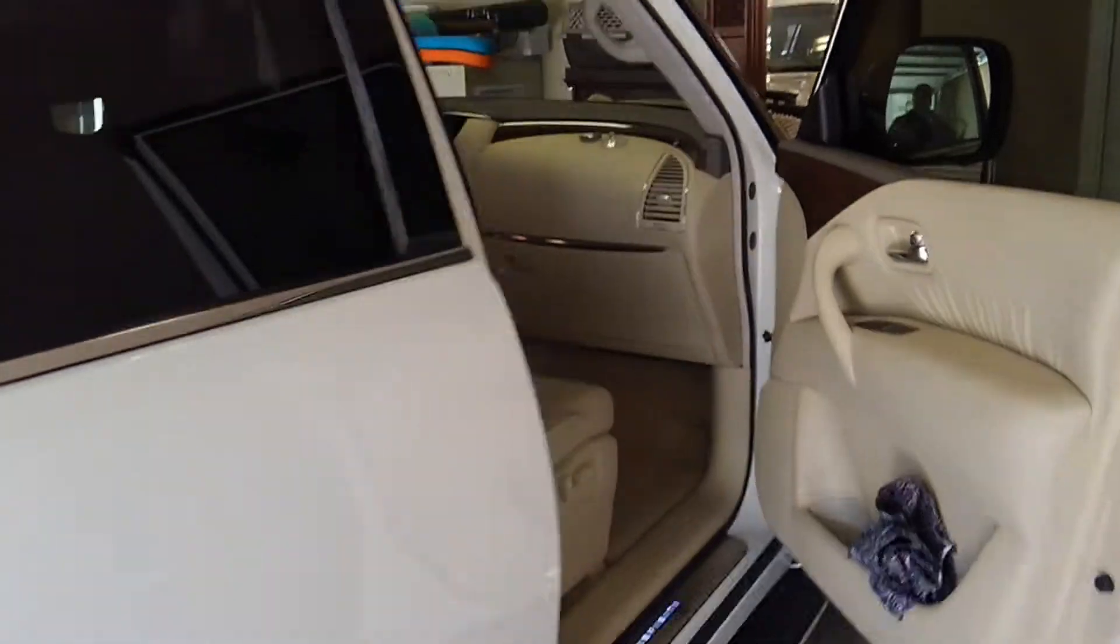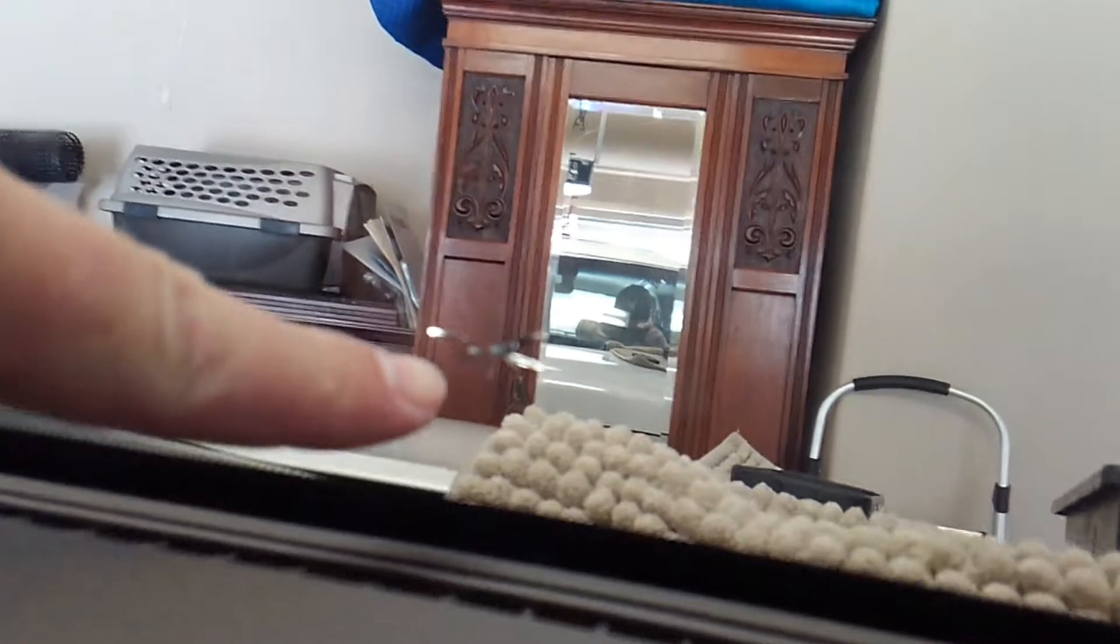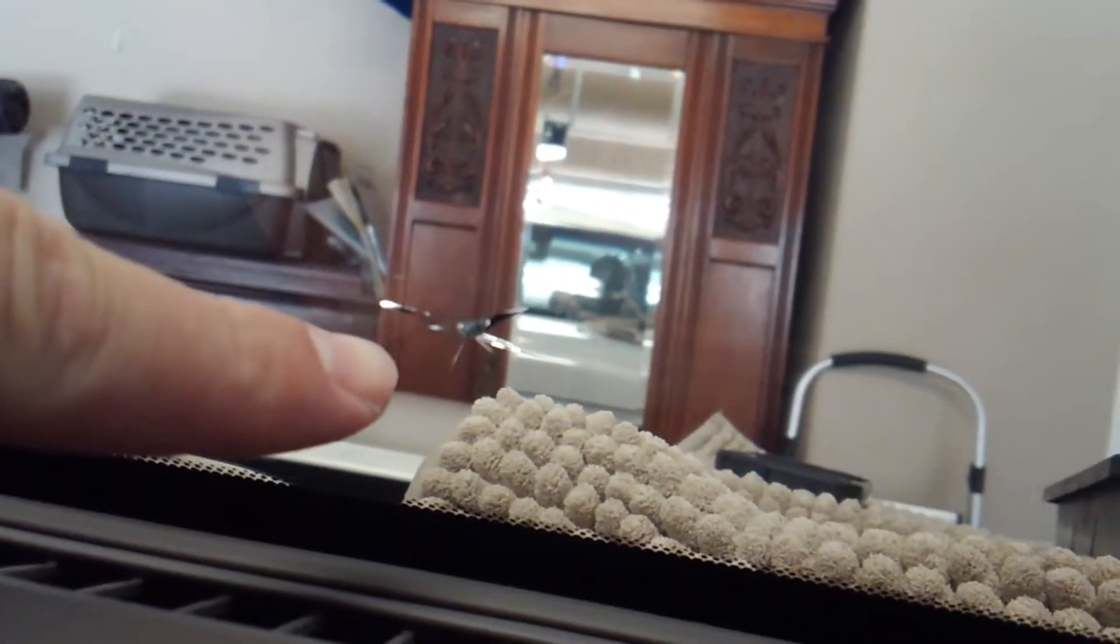Hey guys, Travis from Mobile Glass here working on an Infiniti QX80. We're doing a windshield repair on a little star break on the passenger side, right along the bottom. We'll get our mirror set up and take a look at it from the outside.